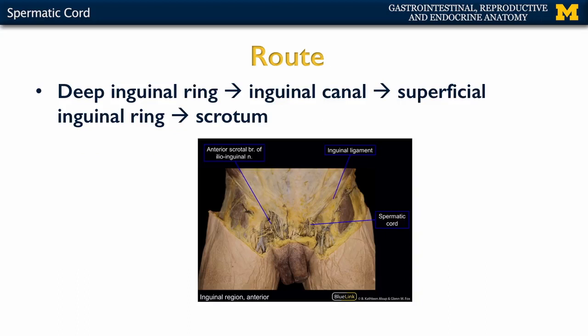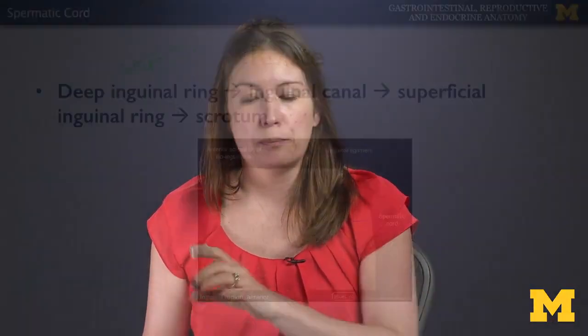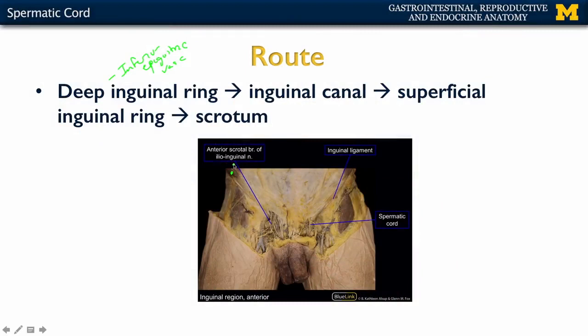The spermatic cord starts at what's referred to as the deep inguinal ring, which you can't see in this image because it's deep — you can't see it unless you're looking at the posterior portion of the anterior abdominal wall. It's just lateral to the inferior epigastric vasculature. It enters through the deep inguinal ring and travels through the inguinal canal, which runs from the anterior superior iliac spine to the pubic tubercle, or the superficial inguinal ring.